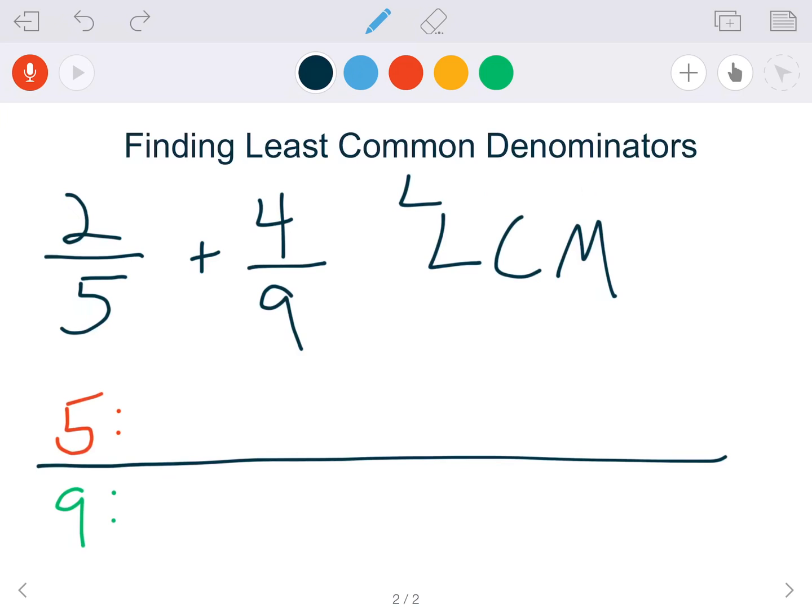Our goal is to find the least common multiple of these two numbers. We're going to do that by listing their skip counting multiples.